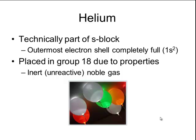Helium is also technically part of the s block because its outermost electron shell is completely full with an electron configuration of 1s2. But it is placed in group 18 due to its chemical properties — it is an inert, unreactive gas, just like the other noble gases.